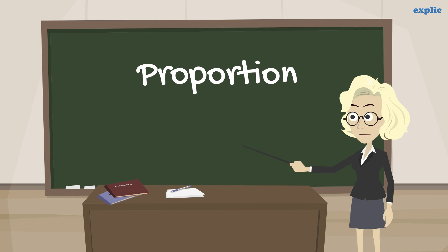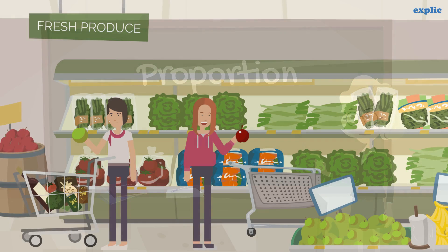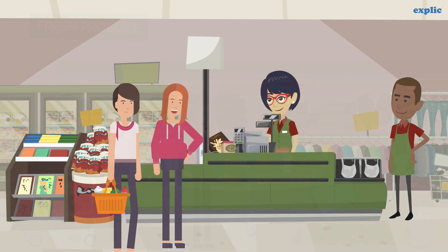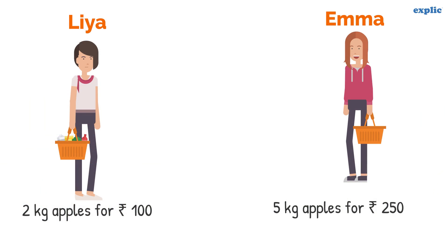Let's understand proportion with an example. Leah and Emma went to the shop to buy some apples. They bought different varieties of apples. Leah purchased 2kg of apples for 100 rupees, whereas Emma purchased 5kg of apples for 250 rupees.